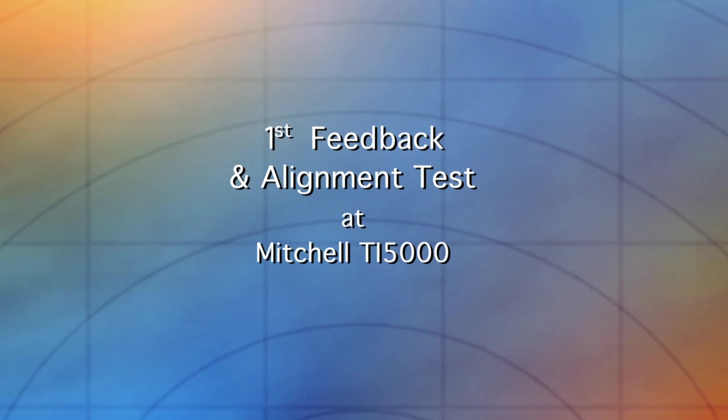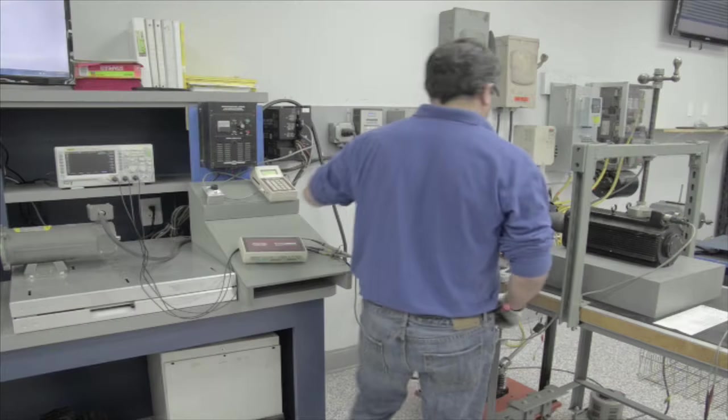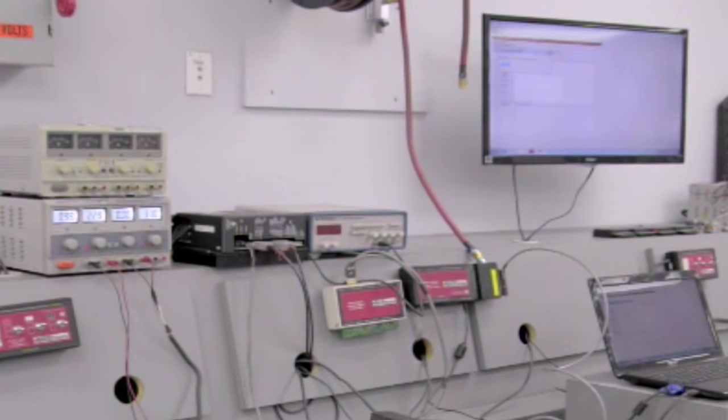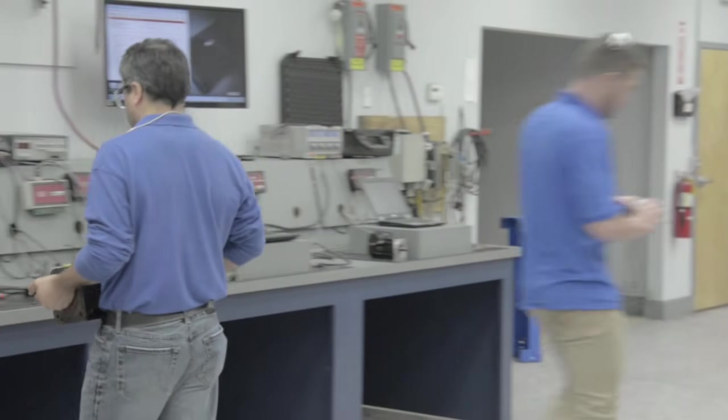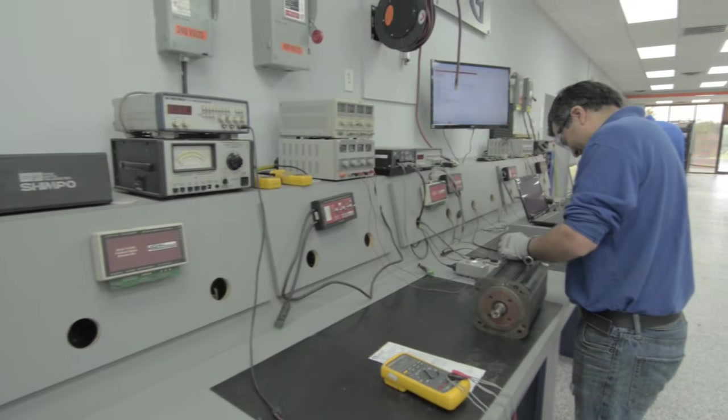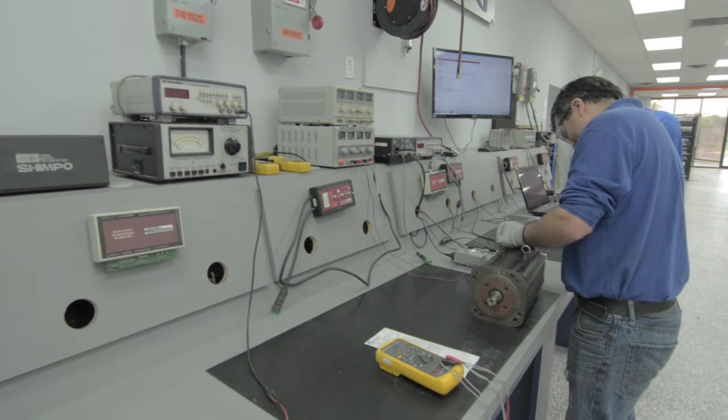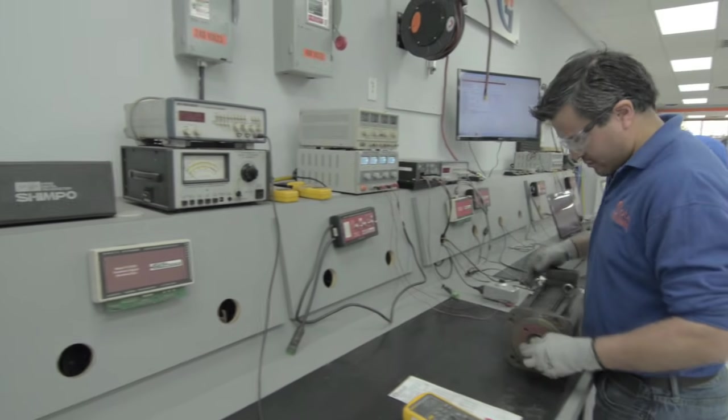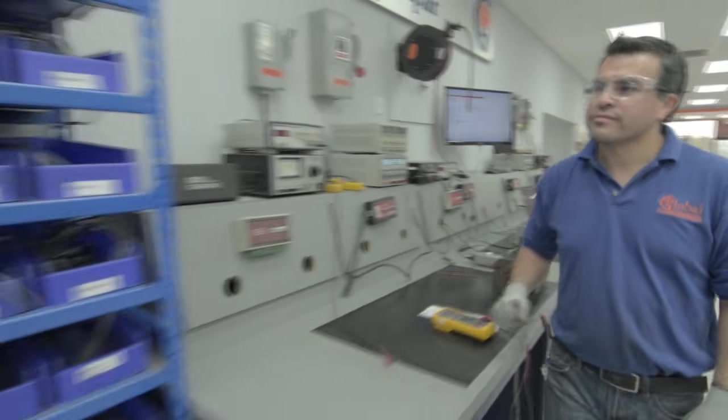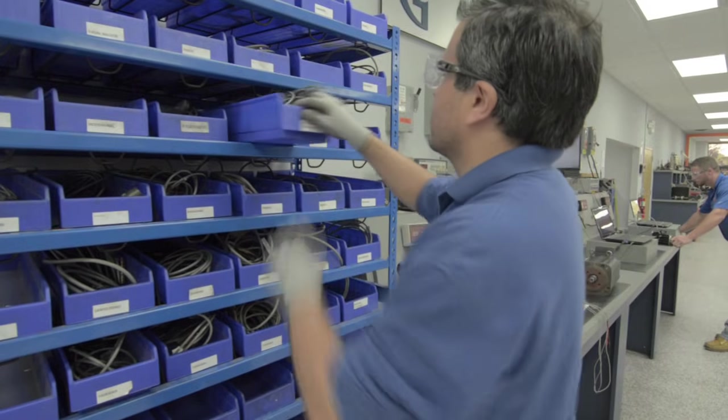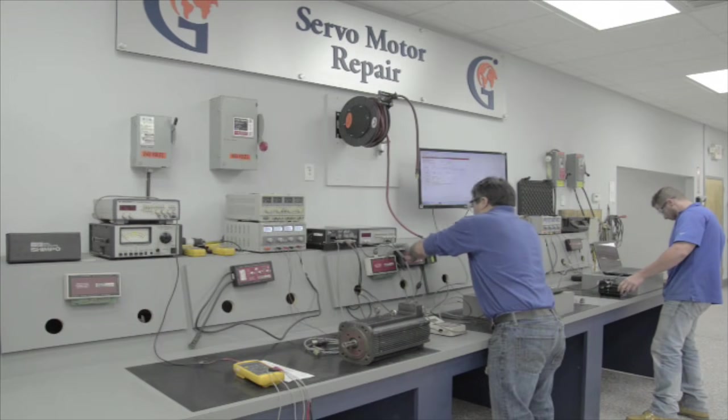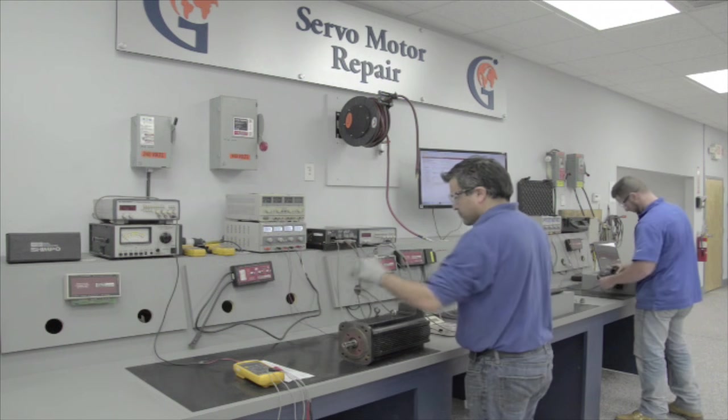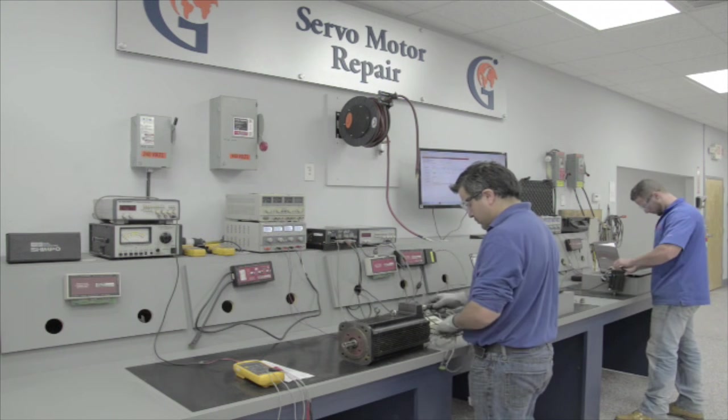Let's head over to our final stage of the servo motor evaluation to the Mitchell Electronics TI5000. The TI5000 is part of our Mitchell Electronics System that allows us to test feedback devices on the servo motor. The most common problem that occurs in a servo motor is within the feedback device. We have hundreds of cables in stock and the software to test almost every type of servo motor, regardless of manufacturer. If we don't stock the cable, we have the ability to make a cable to test your servo motor.